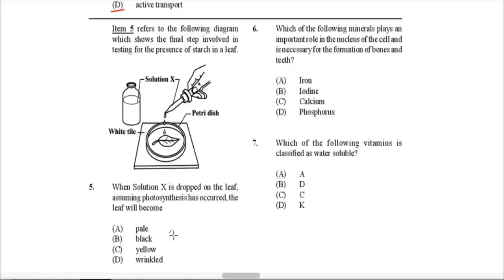Item 5 refers to a diagram showing the final step in testing for the presence of starch in a leaf. When solution X (iodine) is dropped on the leaf, assuming photosynthesis has occurred, the leaf will turn blue-black. Iodine is generally a light brownish-yellow color, and when dropped on a leaf containing starch it changes to blue-black. The options just list 'black,' so B would be the correct answer, though typically it's described as blue-black.